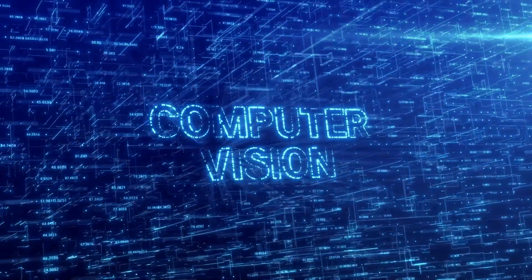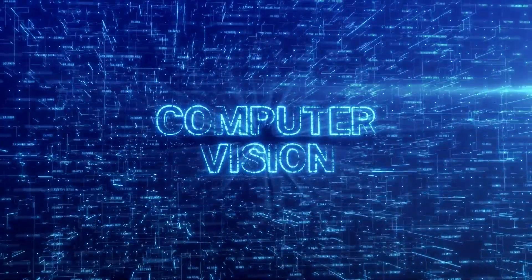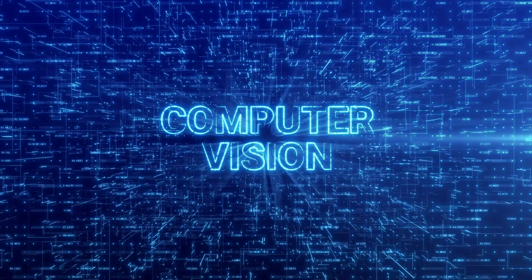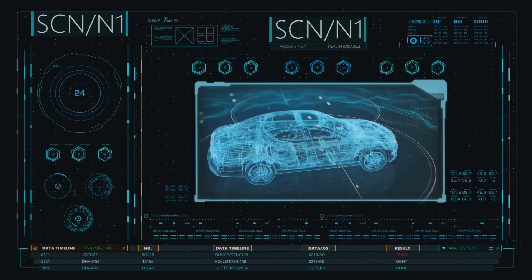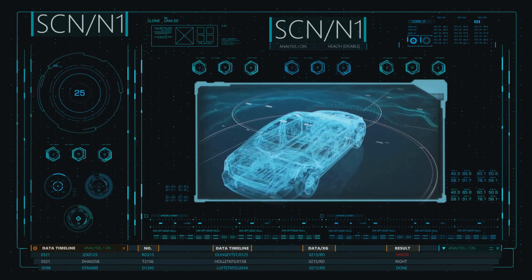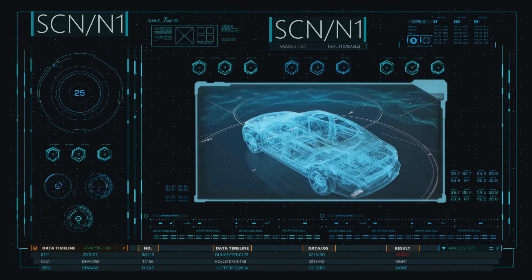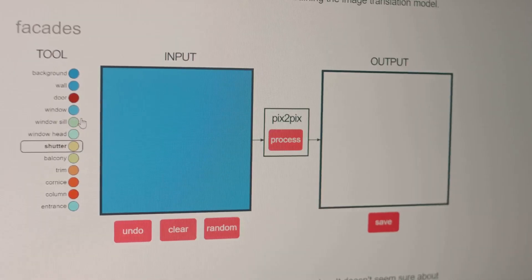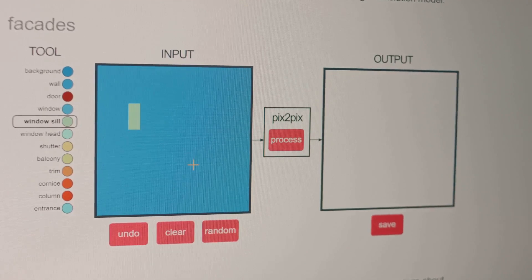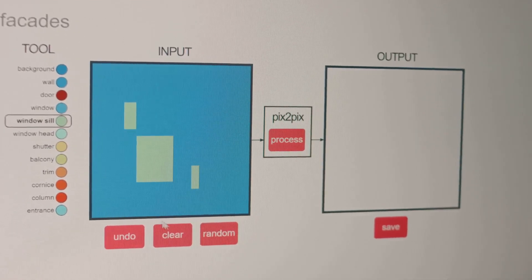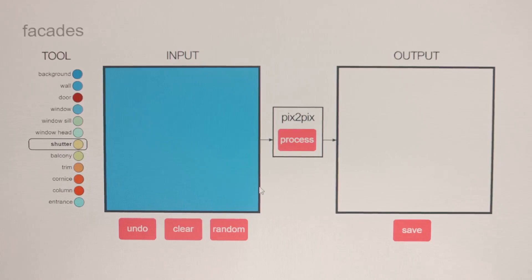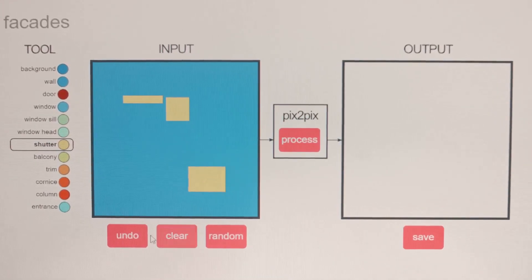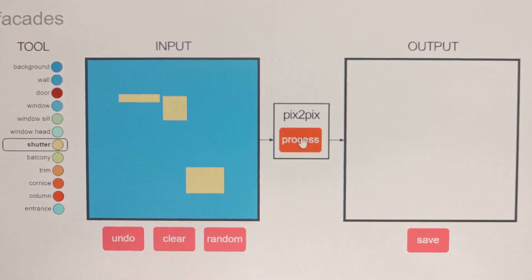But it's not just about recognizing an object, it's also about understanding the context. For instance, a computer vision system should not only recognize a car, but also understand its position, orientation, and even whether it's moving or not. This contextual understanding is crucial for applications like autonomous vehicles, where AI needs to make informed decisions based on the visual input it receives. These systems employ techniques such as edge detection, texture analysis, and color segmentation to extract features from images. They also use machine learning and deep learning models to learn from these features and make accurate predictions.